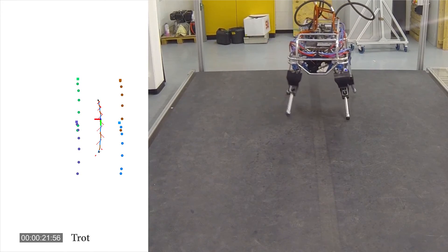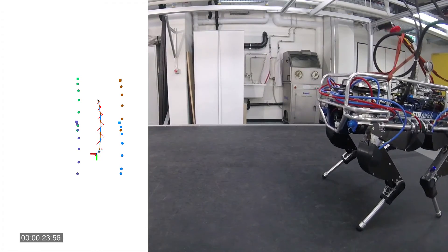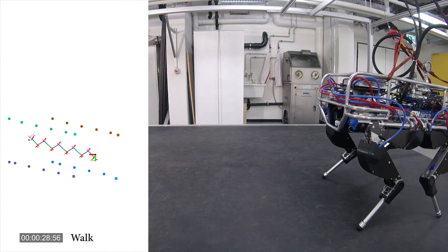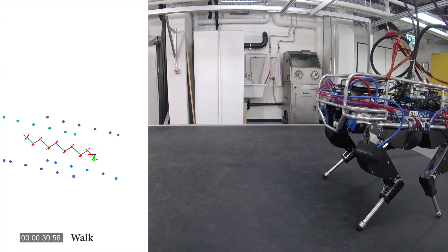This Cartesian plan is transformed to joint torques using projected inverse dynamics. The actual position of the body, given by the state estimator, is shown by the red-green coordinate system.